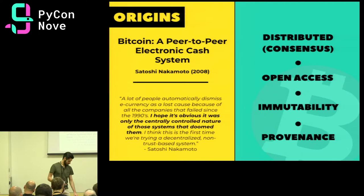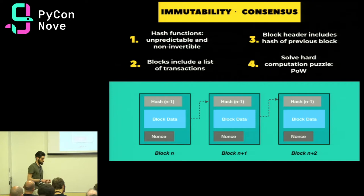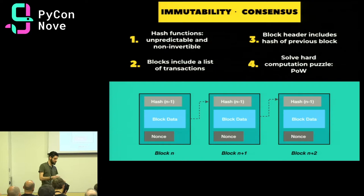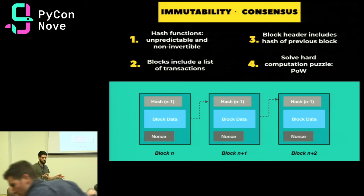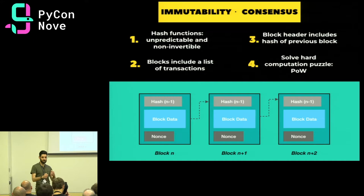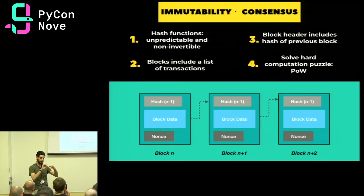Immutability and consensus are based on cryptographic foundations, above all the concept of hash functions. A hash function takes any input and produces an unpredictable and non-invertible result. Unpredictable because even if we flip just one bit of the input, the output will be very different. Non-invertible because from the result of a hash function, we cannot go back to the input. This cryptographic technique is used to build the chain of blocks, and the links between blocks are computed as hashes.